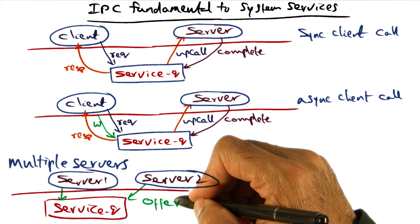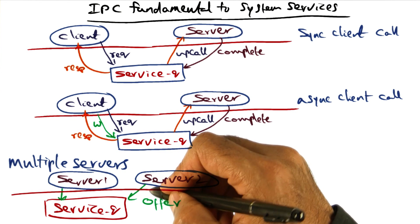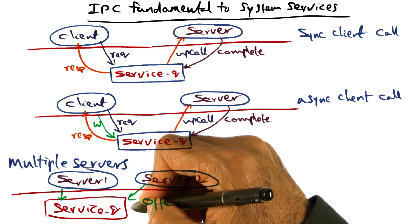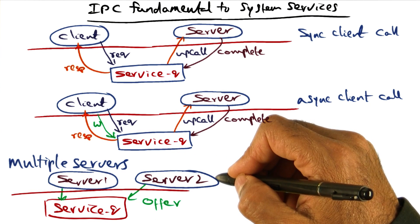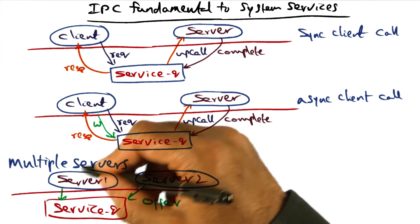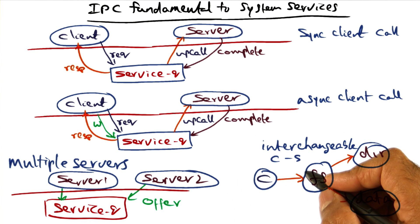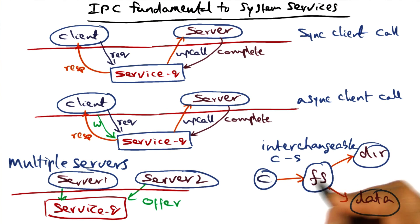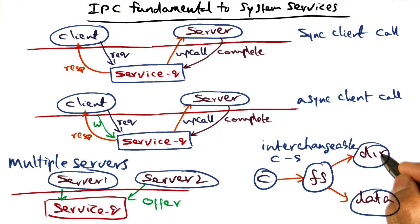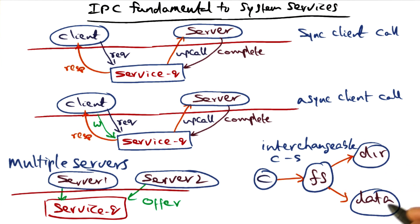The IPC semantics supported by Quicksilver allow multiple servers to wait on a service queue. The way they do that is by making a call called 'offer,' which essentially says: I am willing to offer my services for this particular service queue. Any number of servers can make this offer, meaning that if requests come in, any one of these servers can be called by the kernel depending on the busyness of the servers handling prior requests. For example, a client can make a call on a file system server, and the file system server in turn makes a call to a directory server and a call to a data server.